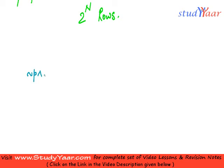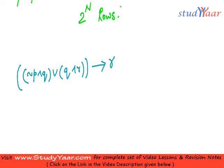So if you have an expression like: not of p and q, or of this with q and r, and finally an implication of this — in this compound proposition you can see you have p, then q (which is repeated), and you have r. So you have 3 primitive propositions.